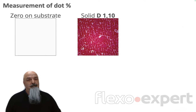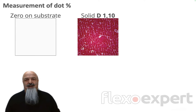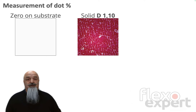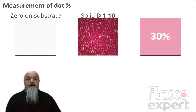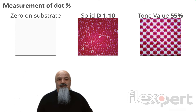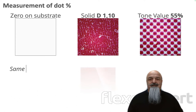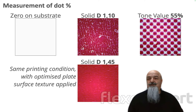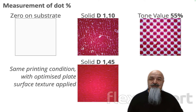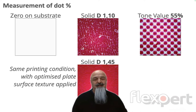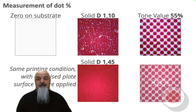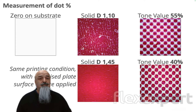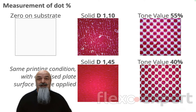Zero on substrate and measure a solid — say with density 1.10. Then I measure the 30% patch and I get a tone value of 55%. Then I use another plate, this time with an optimized surface texture applied. The solid will print with less pinholes, better laydown, and higher density. Now the same 30% patch reads 40%. So we have reduced dot gain by 15% just by applying a plate texture.